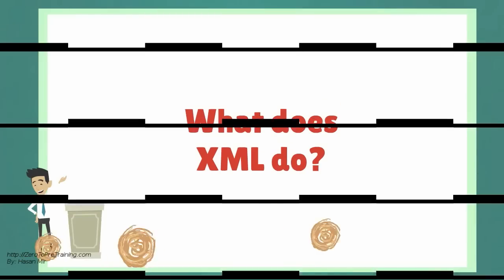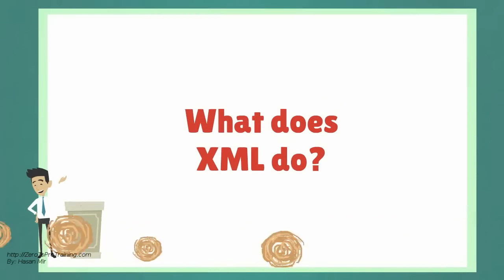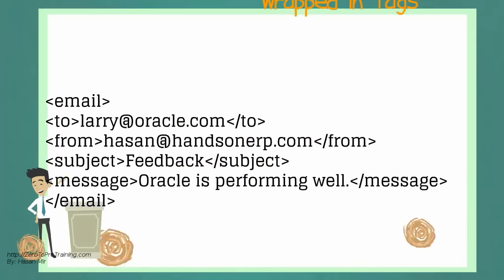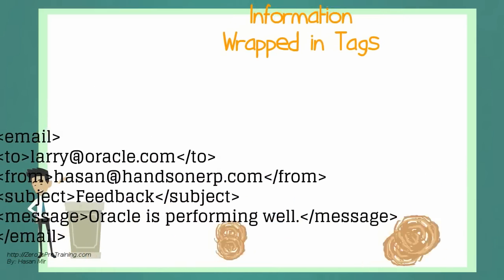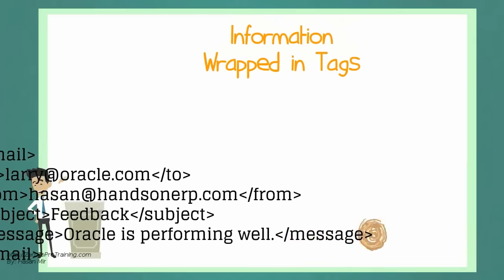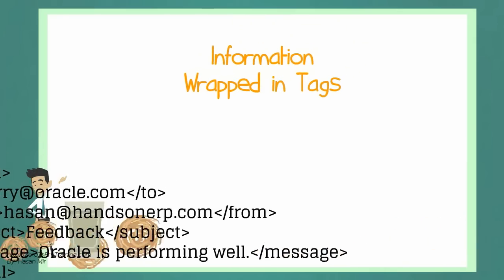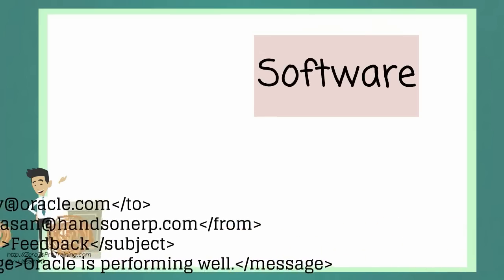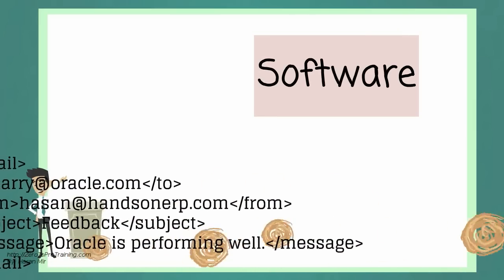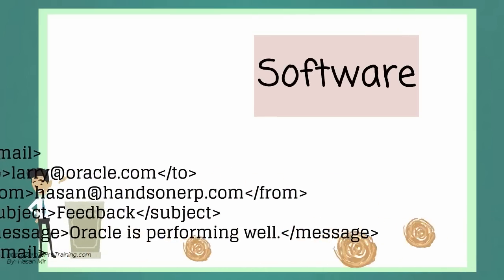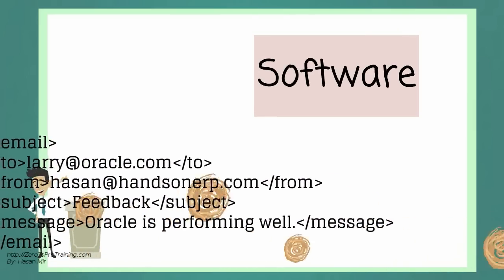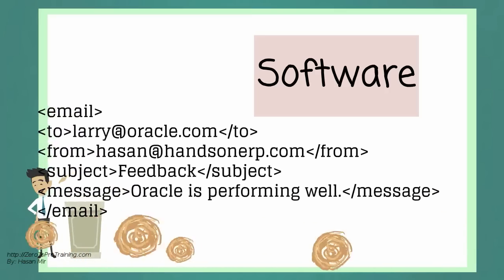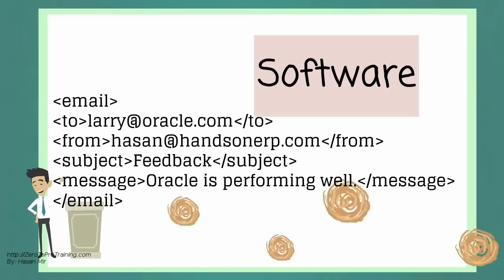The question is: what does XML do? XML is just information wrapped in tags — other than that, it does not do anything. For example, the XML document on the screen represents an email. However, XML is not going to send this email out. Software is required to do this job.